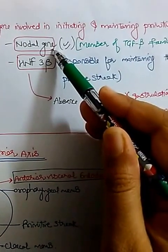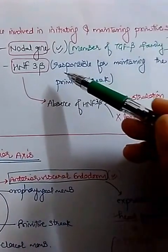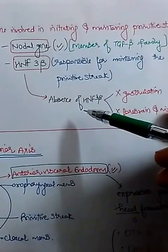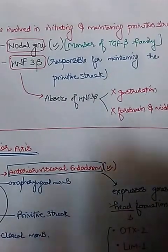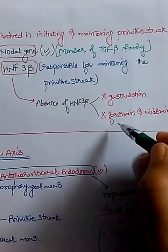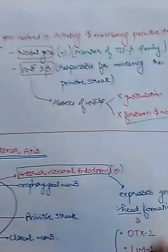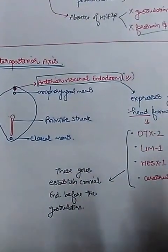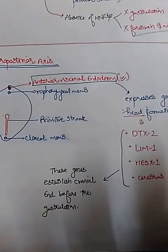The nodal gene is a member of the transforming growth factor beta (TGF-beta) family. Another gene, HNF3-beta, is responsible for maintaining the primitive streak. Absence of HNF3-beta leads to lack of gastrulation. Since this gene is also responsible for the formation of the forebrain and midbrain, those structures will also not form in its absence.